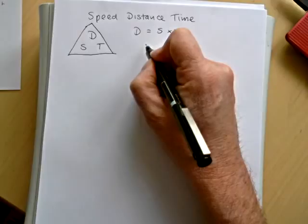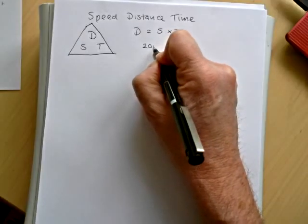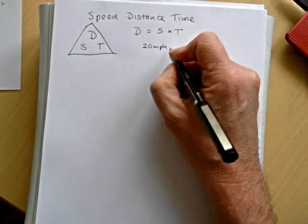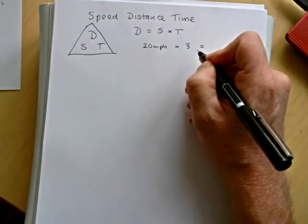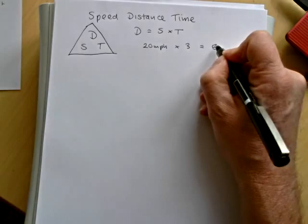For example, if I was doing 20 miles per hour on my bike for three hours, and if I multiply those two numbers together, I would have travelled 60 miles.